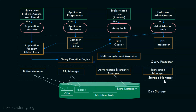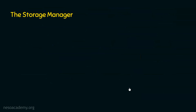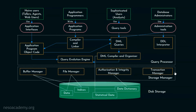In part one of the database system architecture, we are going to exclusively focus on the storage manager and the disk storage — specifically the buffer manager, the file manager, the authorization and integrity manager, and the transaction manager. Also, we are going to see about the data, indices, the statistical data, and the data dictionary. Let's understand why we need the storage manager and what role it plays in the database system architecture.